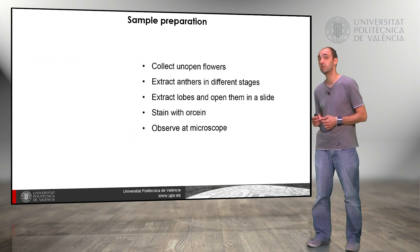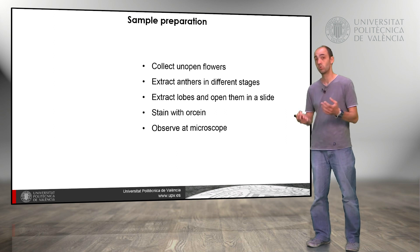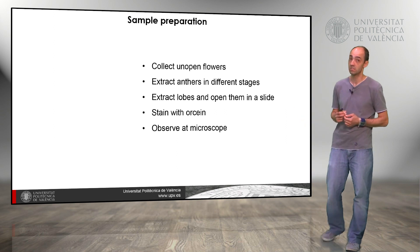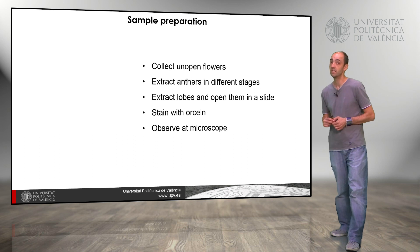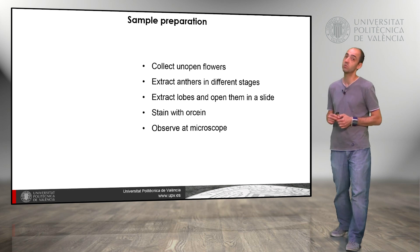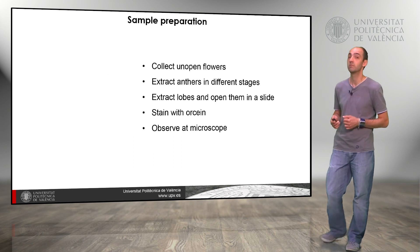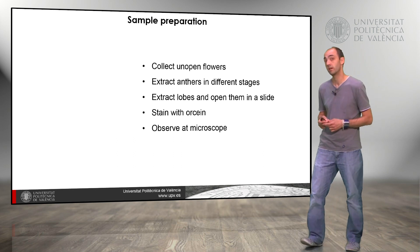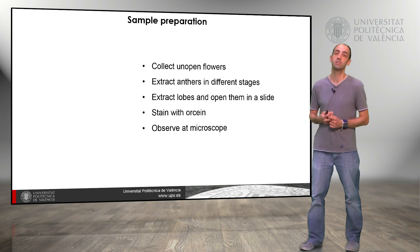The steps that we are going to follow: we collect a sample of flowers, we extract the anthers in different states, we extract the locules and open them on a slide, and then we stain with orcein and observe at the microscope. That is what we are going to see in the following video.